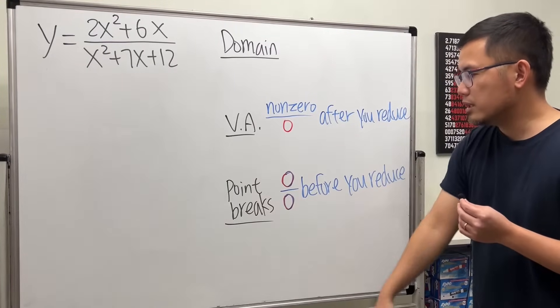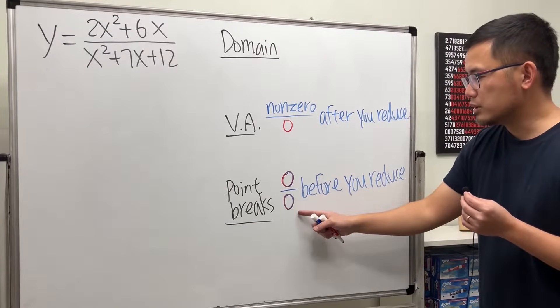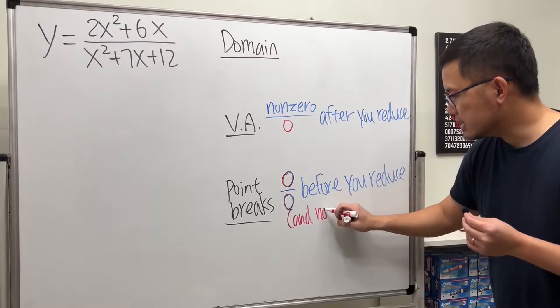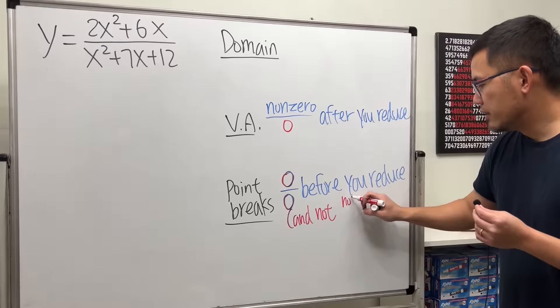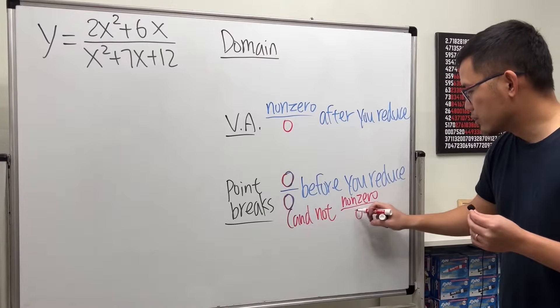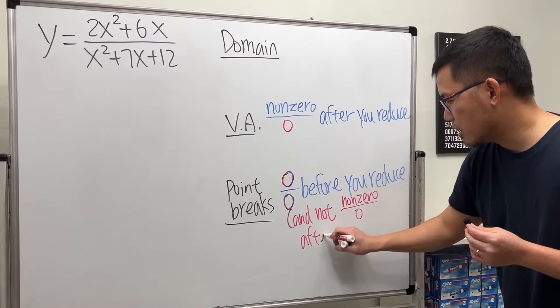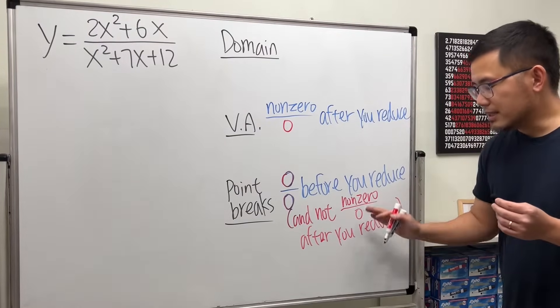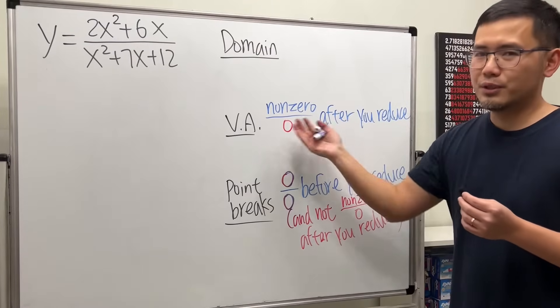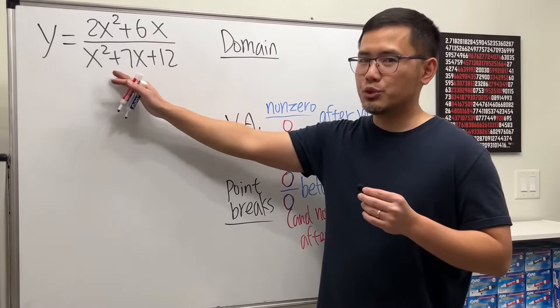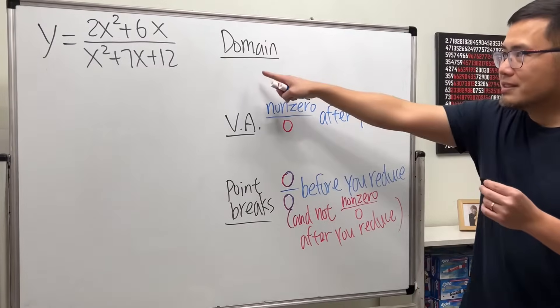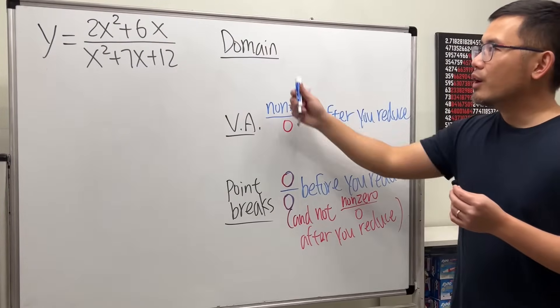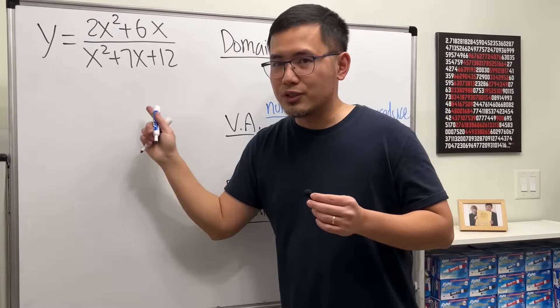Point breaks or removable discontinuity is when you get zero over zero before you reduce and you don't get non-zero over zero after you reduce. Because otherwise, you will still have a vertical asymptote. But again, we do not have that situation here. And notice that I put down the domain right here. Because these go together. For the domain of a rational function, let's also review that.